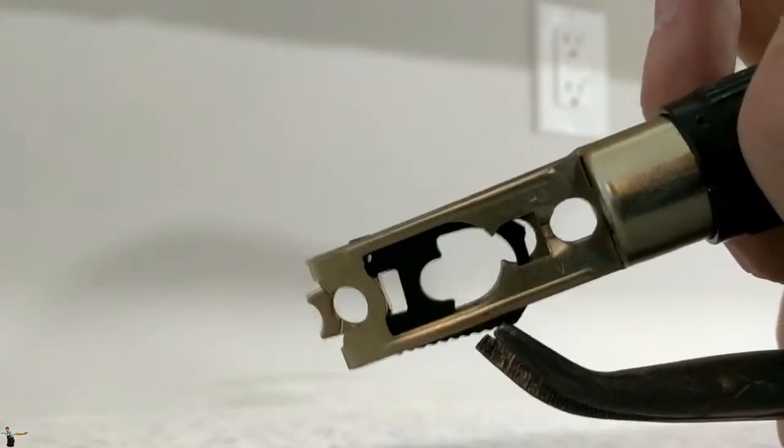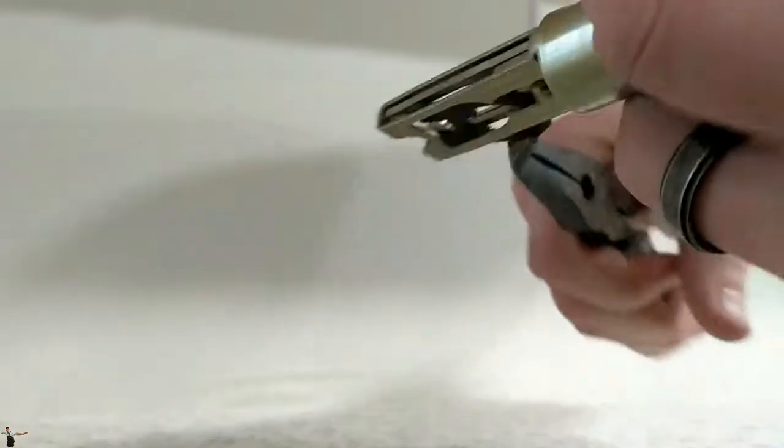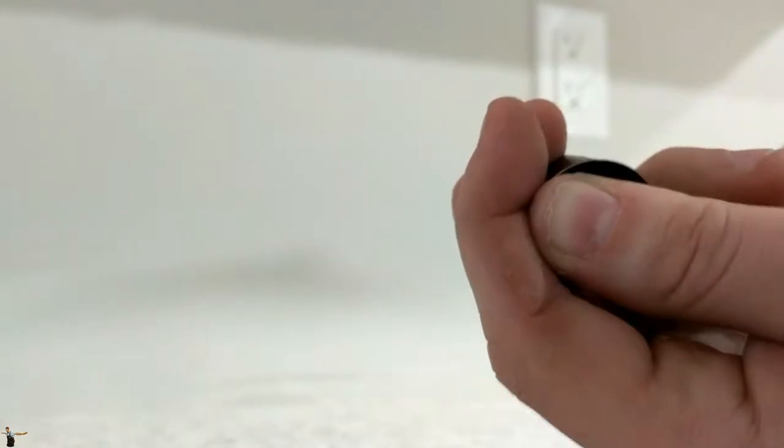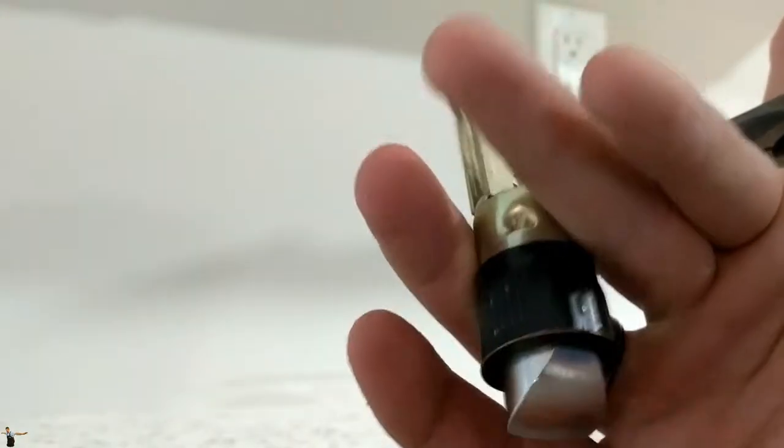Then you just take your pliers and yank it out. You put your pliers in there while still holding down this button and yank it out, then let go.